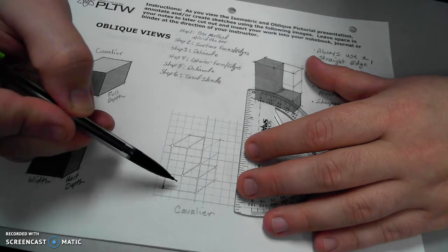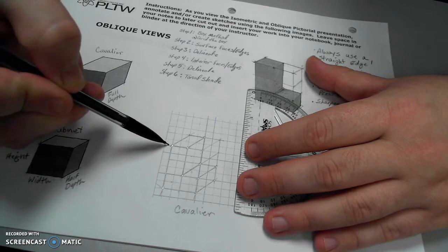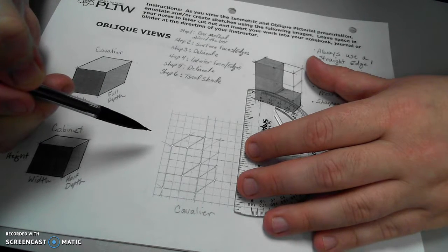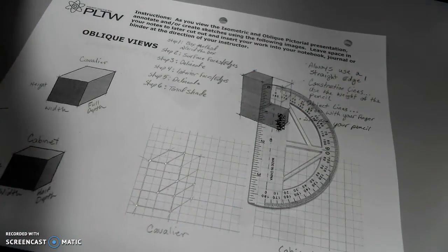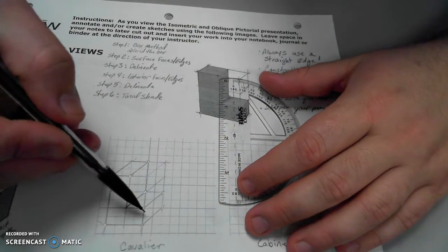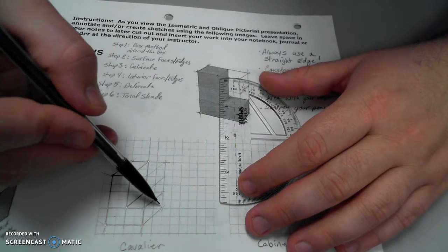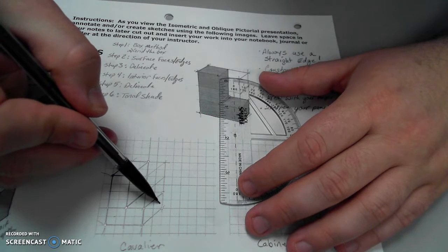Because my front face has two dimensions, width and height, then my tonal shade lines should match that. They should only move in the width or height direction. When I apply one layer to the right side or profile, then I would apply a depth or a height line, but not a width line.